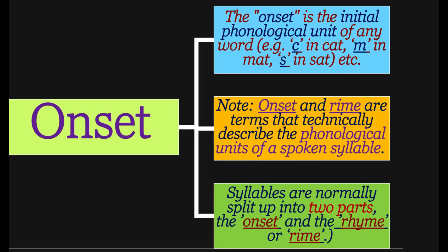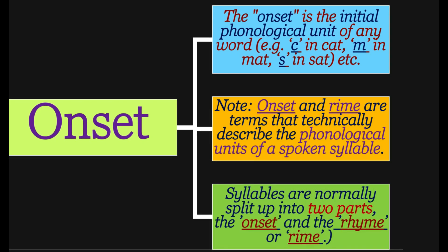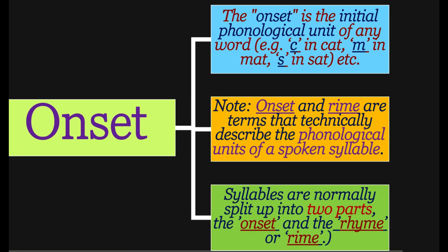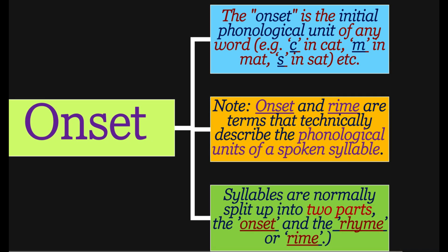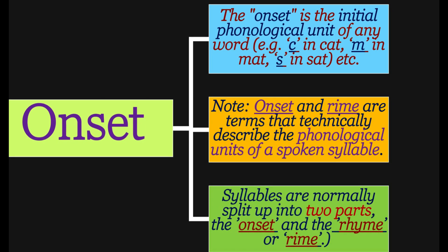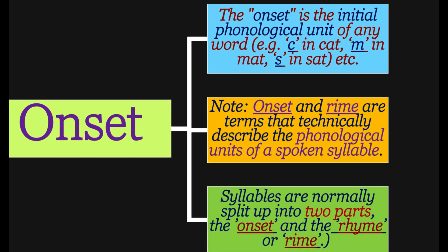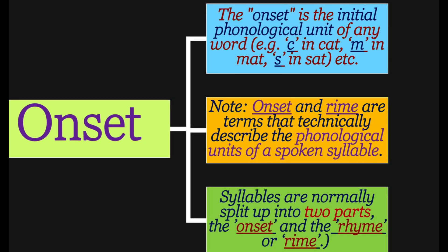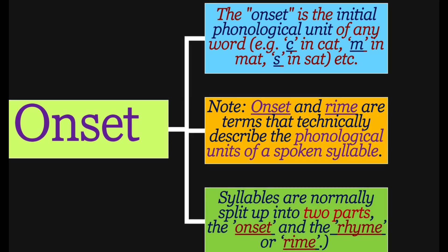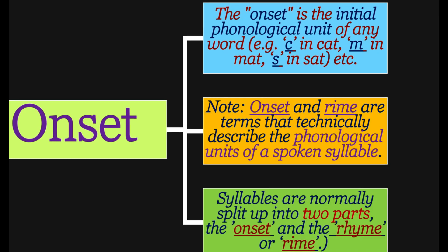An important note: 'rhyme' is sometimes spelled r-h-y-m-e or r-i-m-e — both are the same. Onset and rhyme are terms that technically describe the phonological units of a spoken syllable. Syllables are normally split into two parts: one part is called the onset and the other part is called the rhyme.